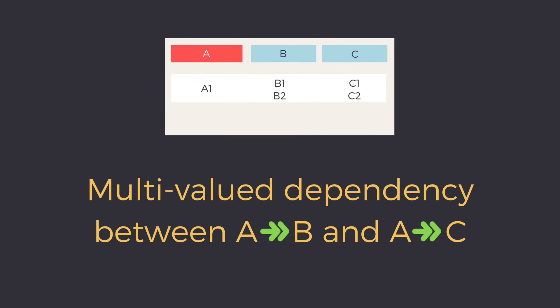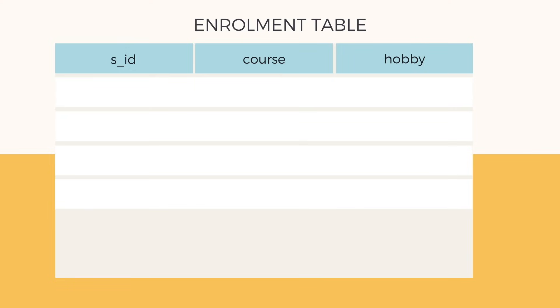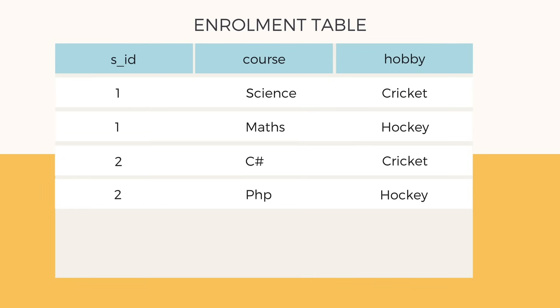Also, in a table, multi-valued dependency can exist for more than one column too. Let's take an example to clear all the doubts. We have a table with S ID (student ID), course (the course opted by the student), and the hobby of the student. As you can see, one student has opted for two subjects and has two hobbies.